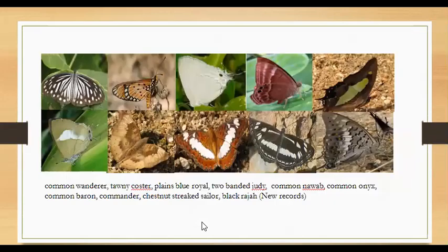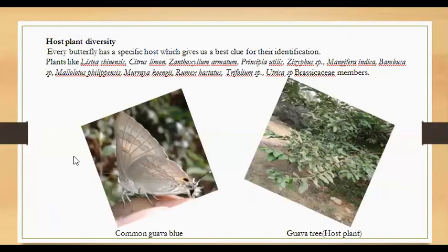I have enlisted new butterfly reports from my sites, particularly from Raika Environment Park, Jammu, including: Common Laundry, Tawny Coaster, Plains Blue, Royal, Two-banded Judy, Common Onyx, Common Baron, Commander, Chestnut-streaked Sailor, and Black Rajah.